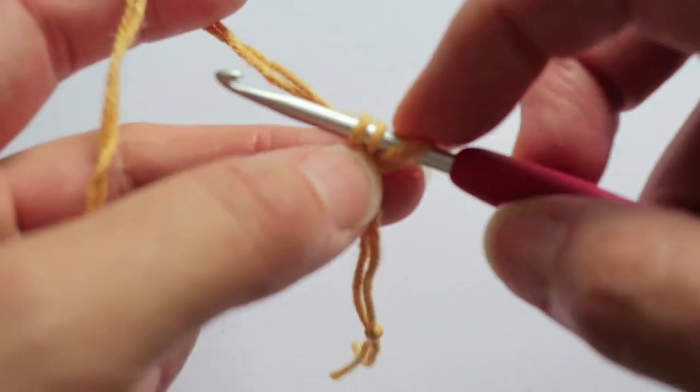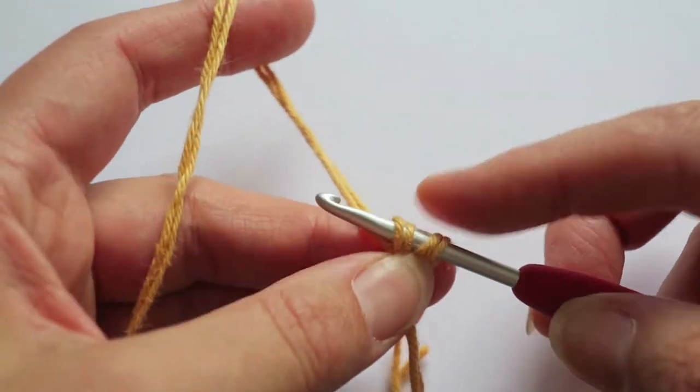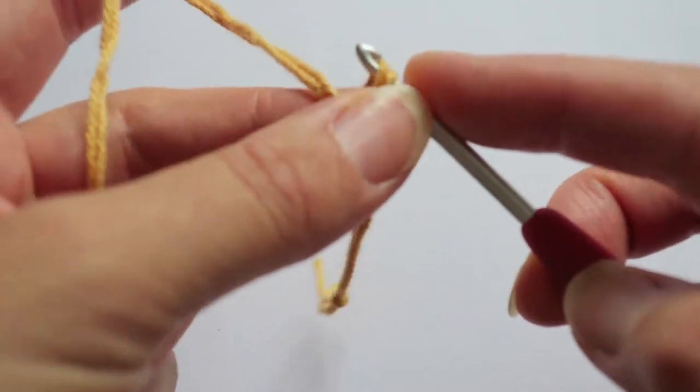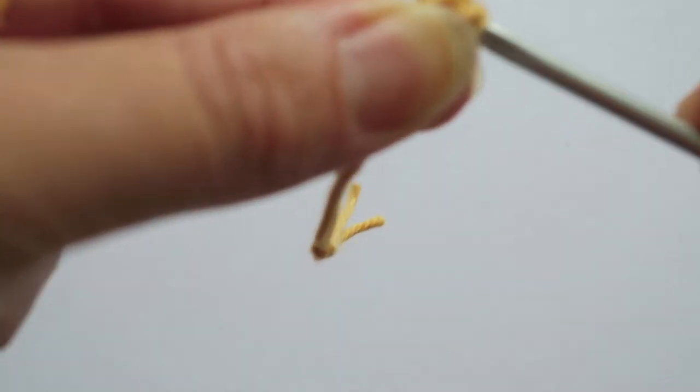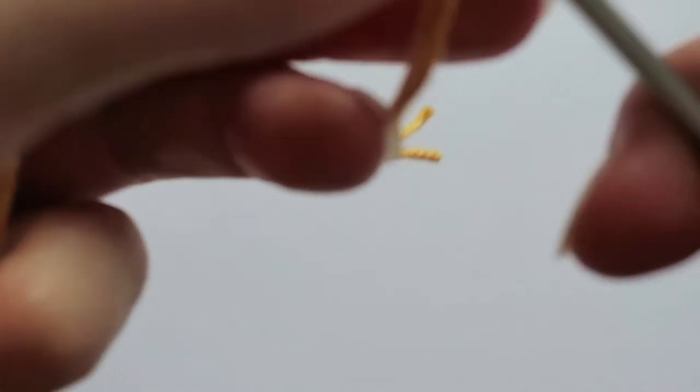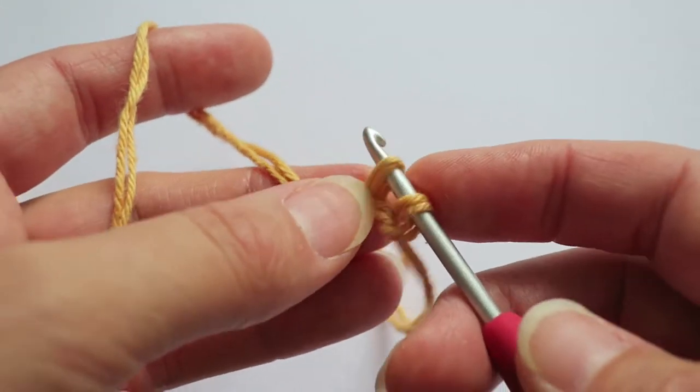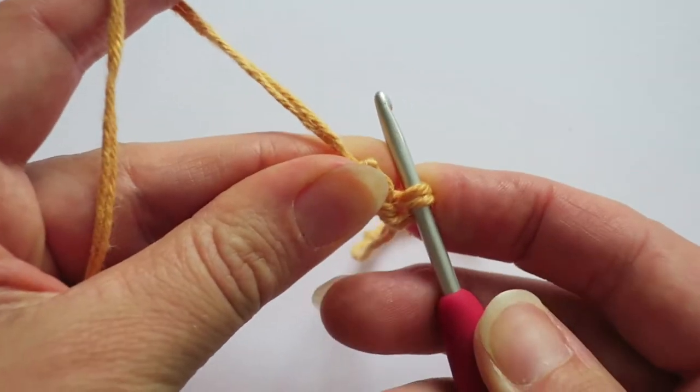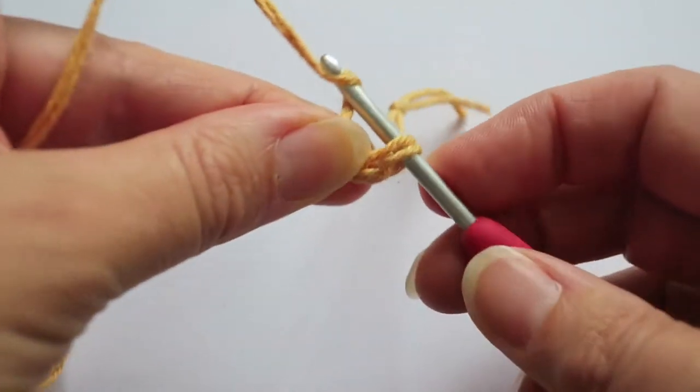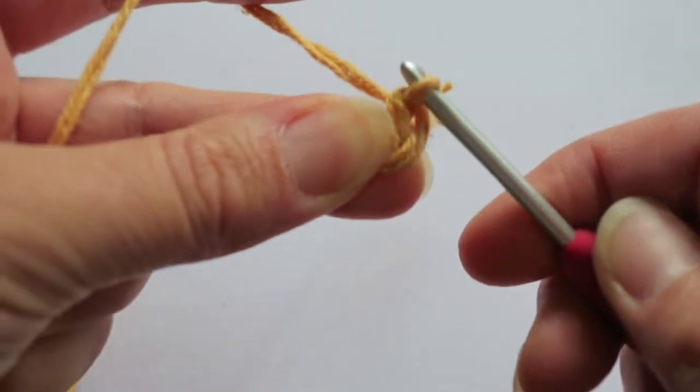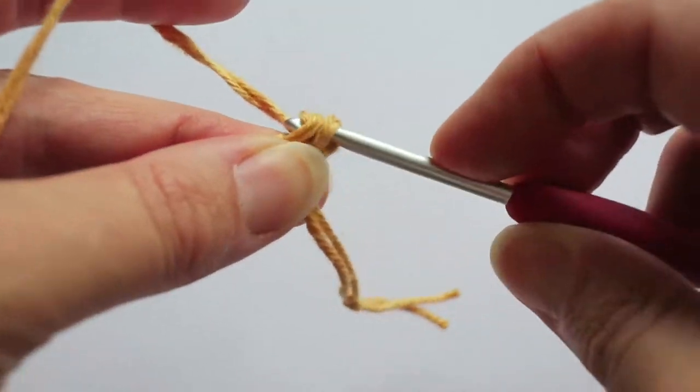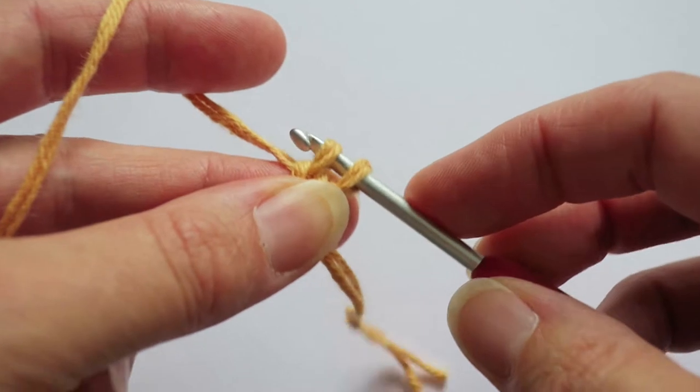Then you move your working yarn over to the left and you're basically chaining. You're going to be chaining each one of these but with just a slight difference. So you're going to chain the first loop and then you're going to take that off the hook and just kind of hold it in place. Pinch it in place with your thumb so you don't accidentally unravel it. Then you're going to chain the second loop. Put the first one back on the hook and chain that and keep repeating that.